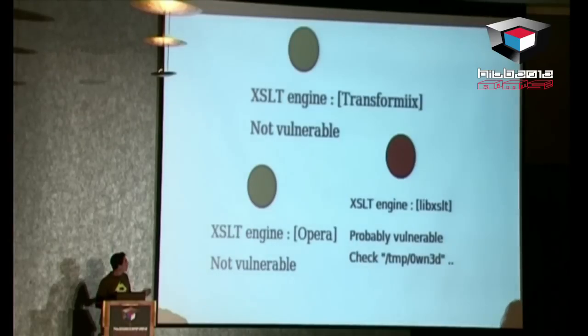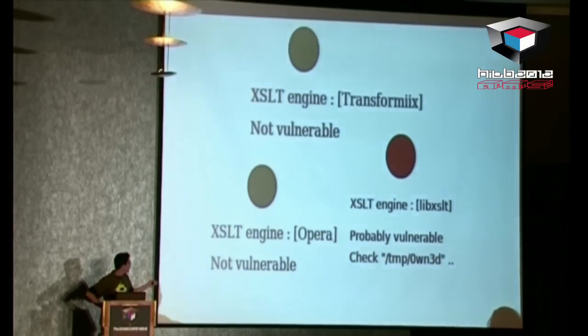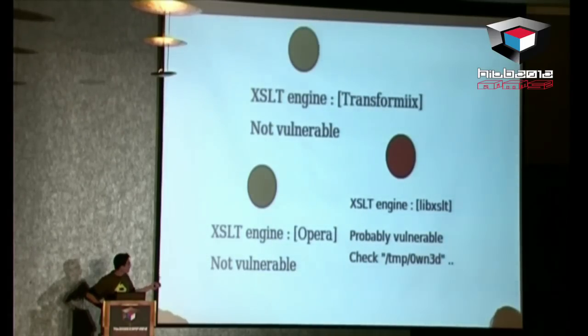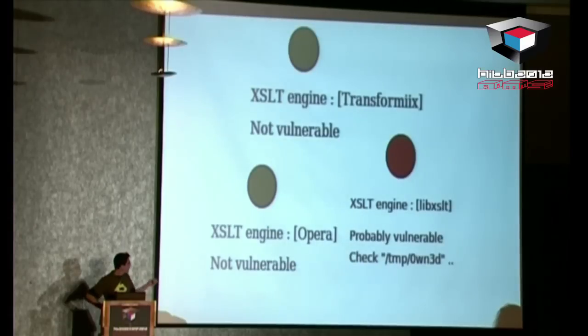If we open this document in several browsers: in Firefox, Transformix — the internal name of the XSLT engine — produces a green circle, which seems okay. In Opera you get the same result. In Chrome, Chromium, Safari, and Maxthon you get a red circle, and you need to check your TMP directory for a file that was just written.